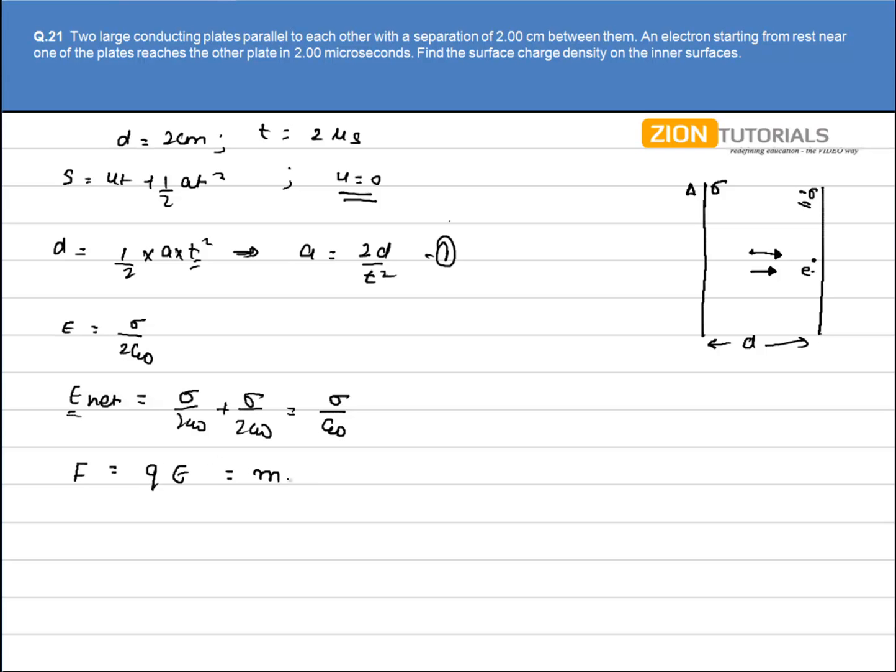This force will be equal to mass into acceleration so that I can get the value of acceleration. Now we know that acceleration is given by 2d by t squared. So substitute over here the electric field is sigma by epsilon not equals mass into 2d by t squared. I had to calculate the surface charge density that is the value of sigma. I know the value of rest of the variables. So sigma comes out to be m into 2d by t squared into 2 times epsilon not by q.